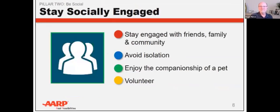The second pillar of brain health is staying socially engaged. While we may not be able to gather in person because of COVID, there are many ways to stay connected from afar — over the phone or through video chat platforms like Zoom, FaceTime, or Skype. Studies suggest that people who have good social networks live longer and are physically and mentally healthier than people who are socially isolated. Connecting with other people is stimulating and challenging, and it often adds meaning and purpose to our lives. Experts say social connectedness is a key predictor of health and independence in later years.